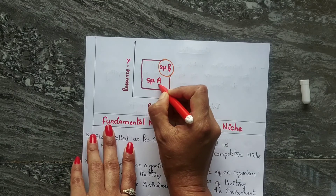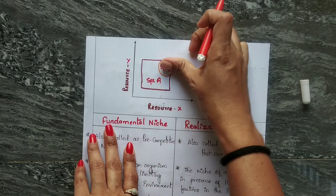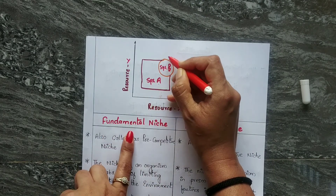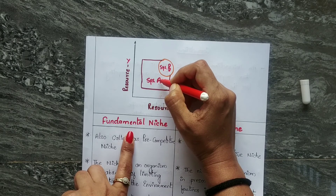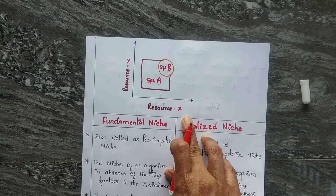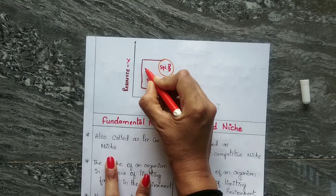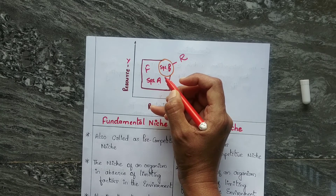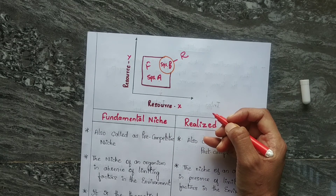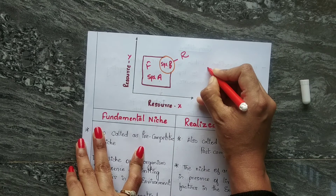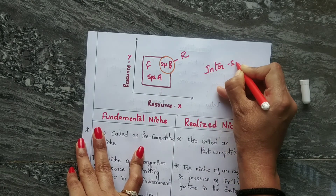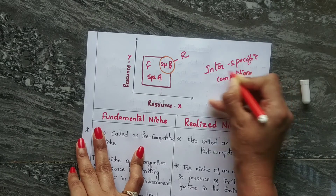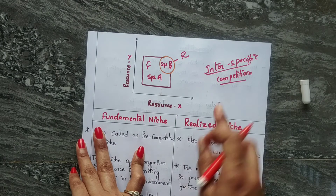In graphical representation, if Species B is absent, the whole space is occupied by Species A — this is the fundamental niche. When Species B arises, it outcompetes Species A, restricting it to a smaller space — that is the realized niche. This difference between fundamental and realized niche arises due to interspecific competition — competition between two different species.